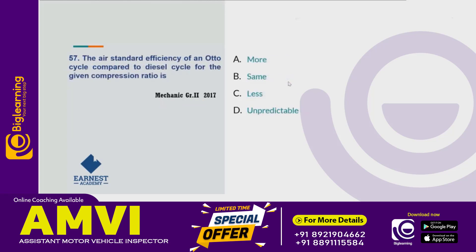Next question: the air standard efficiency of an Otto cycle compared to the Diesel cycle for the given compression ratio. This depends on the conditions — whether we are comparing for the same compression ratio or the same maximum pressure. For the same compression ratio, Otto is more efficient; for the same maximum pressure, Diesel is more efficient.